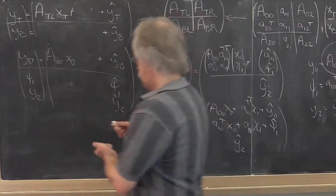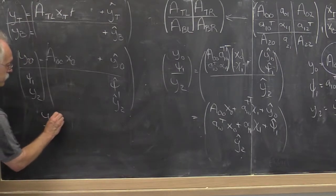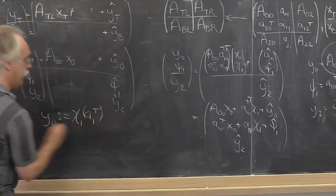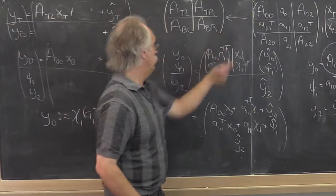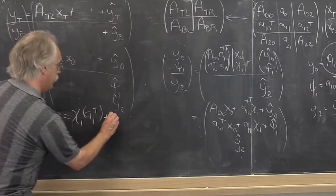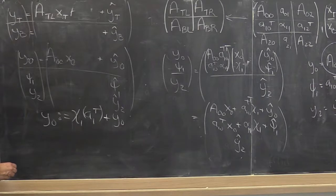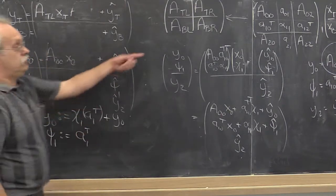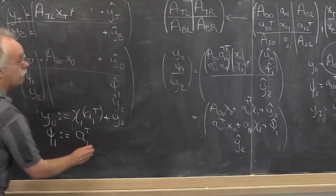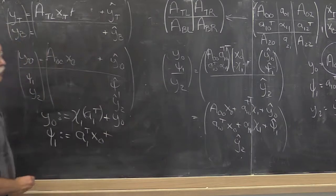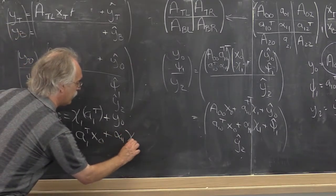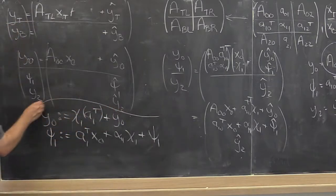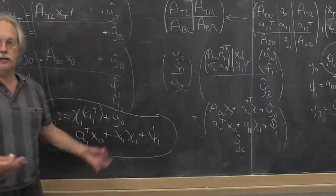And then we conclude that the actual updates are that y zero is updated with psi one times a one transpose. So that's the row vector sitting right here plus what's already in y zero. And psi one has to be updated with the dot product of a one transpose, this row vector, with x zero to which we add the product of alpha one one times chi one. And we must add that to what's already in psi one. And this then becomes the actual computation in the body of the loop.